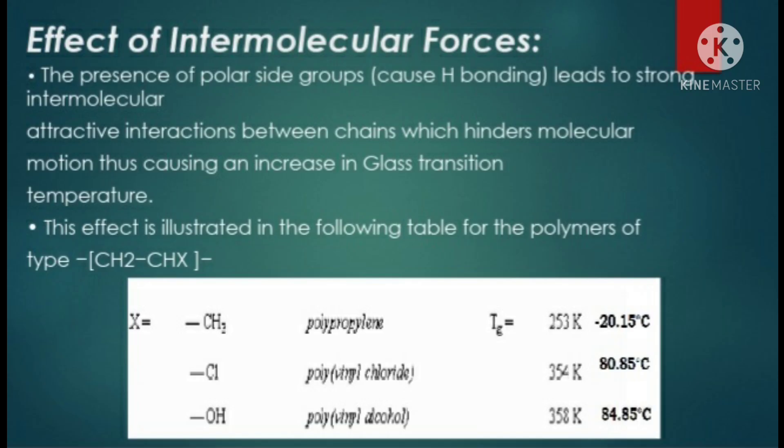Now we will study the effect of intermolecular forces. Due to the presence of polar side groups, there are strong intermolecular interactions between chains which hinder molecular motion, causing an increase in glass transition temperature. If a polar group is present in chain molecules, it will cause hydrogen bonding, and due to hydrogen bonding both chains will be in a compact position, so they will not easily show segmental motion, meaning the glass transition temperature will increase.